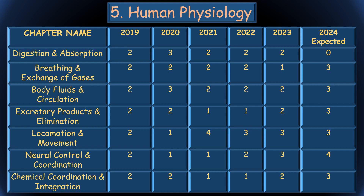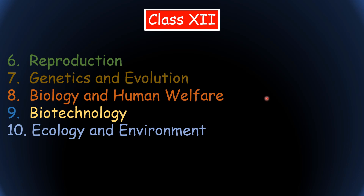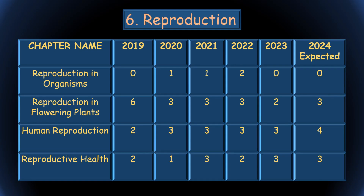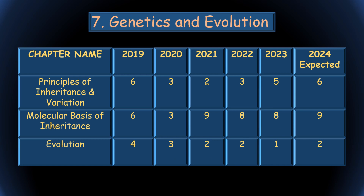That completes the class 11 syllabus. Class 12 contains five units: Reproduction, Genetics and Evolution, Biology and Human Welfare, Biotechnology, and Ecology and Environment. The Reproduction unit has four chapters, but Reproduction in Organisms has been deleted this year. From Reproduction in Flowering Plants, three questions are expected; Human Reproduction is very important with four questions expected; and Reproductive Health can yield three questions.